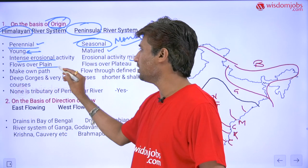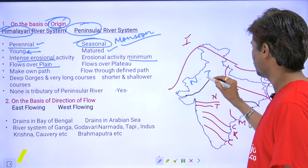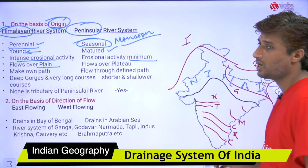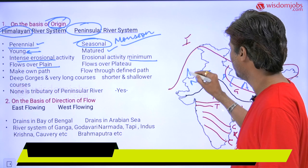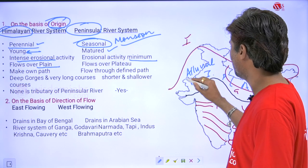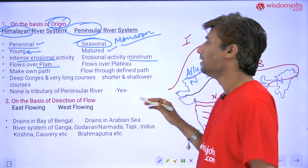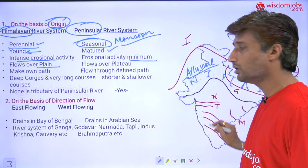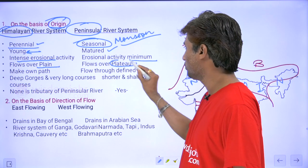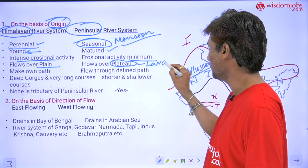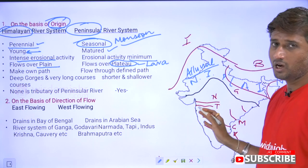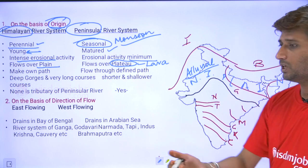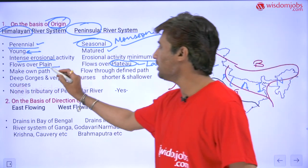Himalayan rivers flow over the northern Indian plain, which was formed by deposition from these very river systems. The plain is made up of alluvial sediments already deposited, so these rivers can erode the surface easily. In contrast, peninsular rivers flow over the peninsular plateau, which is made up of lava, so their erosional activity is not at the same level.